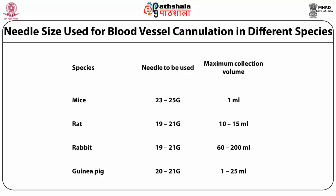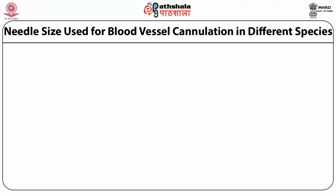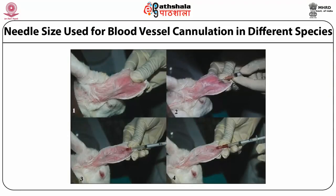Regarding blood collection across species — needles used and maximum volumes from mouse, rat, rabbit, and guinea pig. In rabbits, blood is collected from the ear vein, not other veins, with pre-anesthetic medication or local anesthesia such as lignocaine to avoid pain.